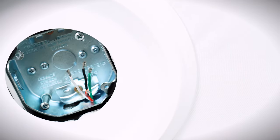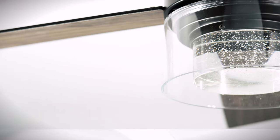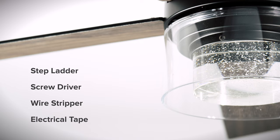To install the fan you will need a UL listed outlet box that is rated for support of up to 35 pounds. You will also need a step ladder, screwdriver, wire stripper, and electrical tape.